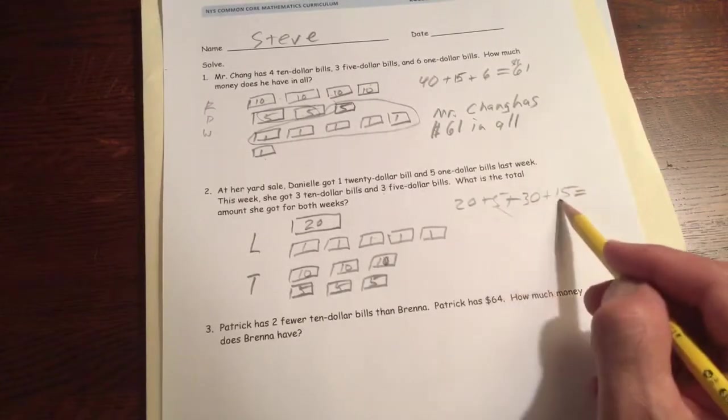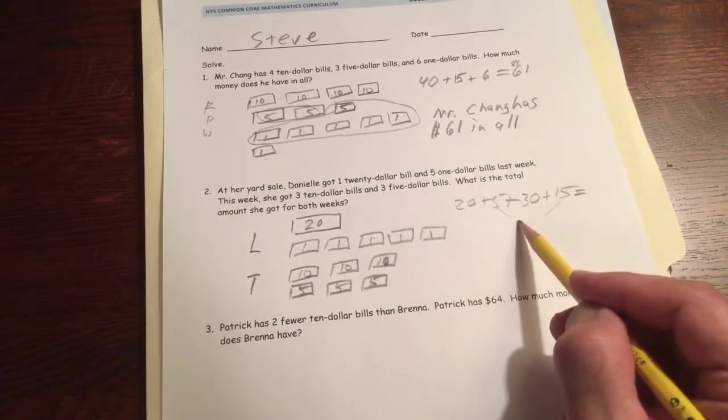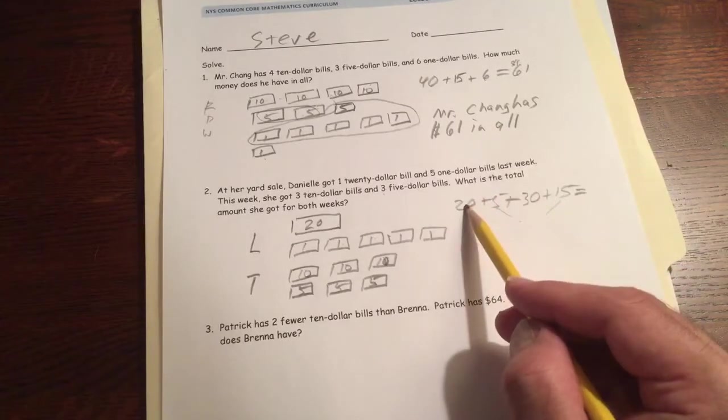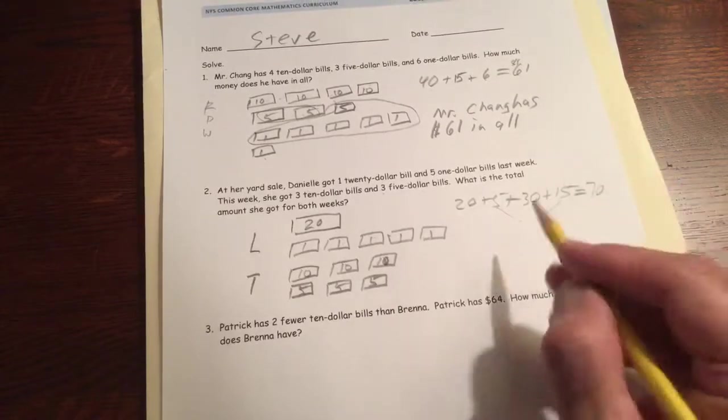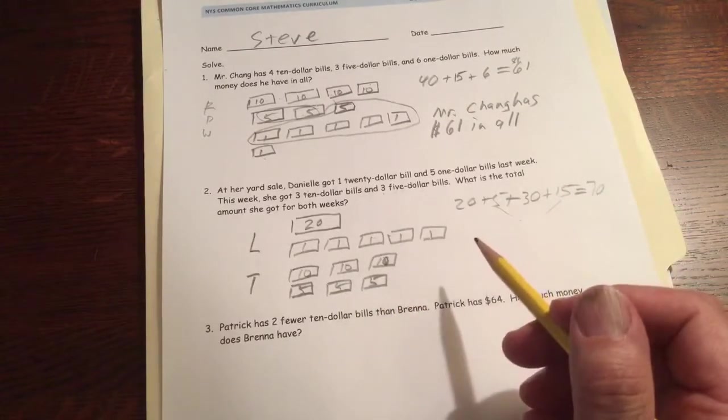And say that this is 15, that's five, that's a 20. So we have 20, 40, and then 30 more. That's going to be $70.